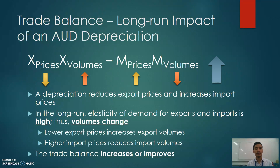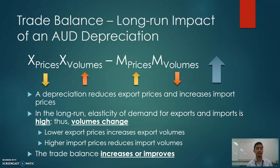In the long run, we typically assume that elasticity of demand for exports and imports is higher than in the short run. As a result, volumes can actually move. The changes in export and import prices are the same as in the short run — a depreciation still reduces export prices and increases import prices. However, because of this increased elasticity of demand, export volumes increase in response to the decline in export prices. For example, if Australia's export of iron ore becomes cheaper due to depreciation, Chinese firms would want to buy more of that iron ore because they can get more for less money, increasing export volumes.